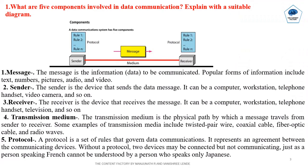What are the 5 components involved in data communication? Explain with a suitable diagram. There are 5 components in data communication: Message, Sender, Receiver, Transmission Medium, and Protocol.